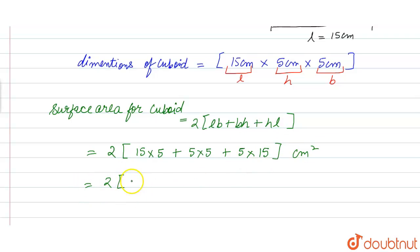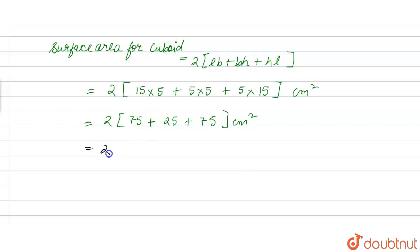We have 2 into 15 into 5 is 75, plus 5 times 5 is 25, plus 5 into 15 is 75 cm square. We have 2 into 75 plus 75 is 150, and 150 plus 25 is 175 cm square.